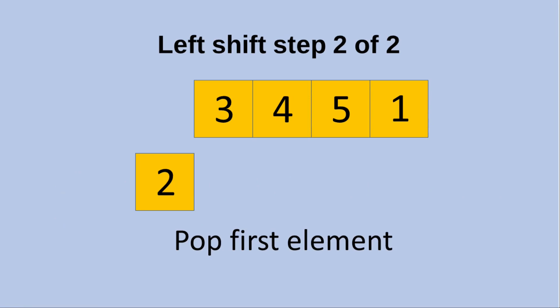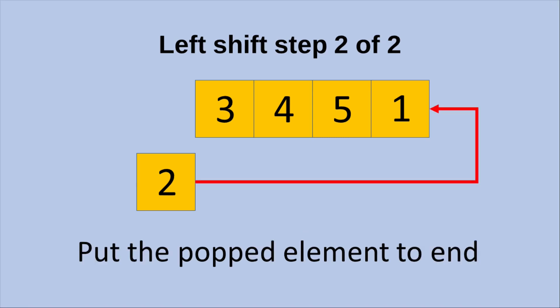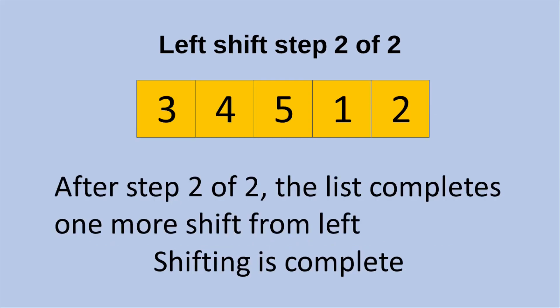We are going to do the second step, which is the last step of the shifting from the left-hand side. Now we pop the first element, which is 2, and then put the popped element to the end of the list. After the second step out of two, the list has completed one more shift from the left-hand side, and the shifting is complete. Finally we have 3, 4, 5, 1, and 2 as the order of the elements inside the list.